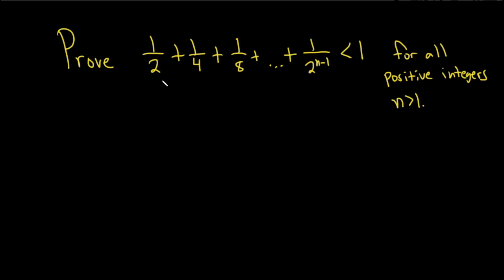In this problem, we're going to prove that 1/2 + 1/4 + 1/8 + ... + 1/2^n is less than 1 for all positive integers n greater than 1.